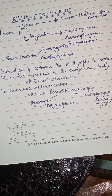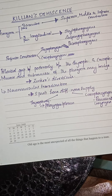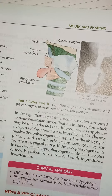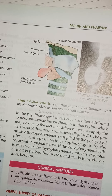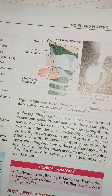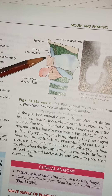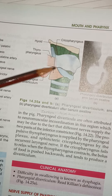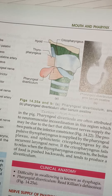Sometimes the mucosa and submucosa of the pharynx may bulge through this dehiscence, forming a diverticulum called the pharyngeal diverticulum or Zenker's diverticulum. Here is an image showing this Zenker's diverticulum, which is formed between the thyropharyngeus and the cricopharyngeus.